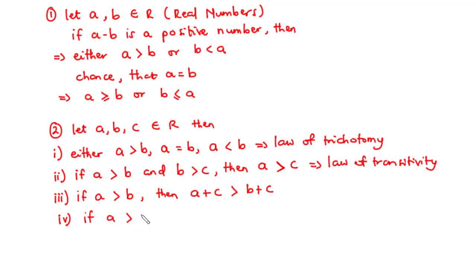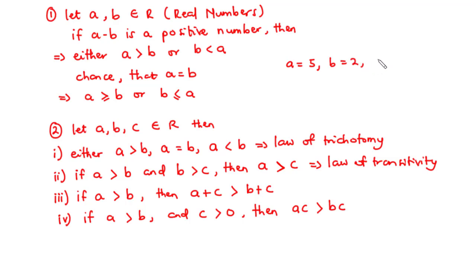Four: if a is greater than b and c is greater than zero, then ac is greater than bc. For example, let a equal 5, b equal 2, and c equal 1. Since 5 is greater than 2 and 1 is greater than zero, we get 5 times 1 equals 5, which is greater than 2 times 1 equals 2. So ac is greater than bc, making this theorem correct.